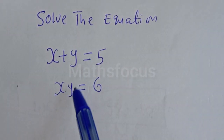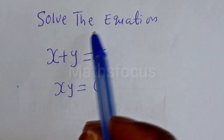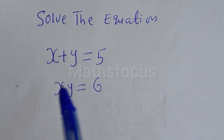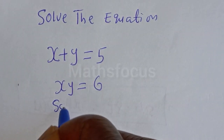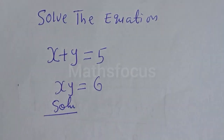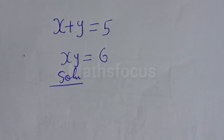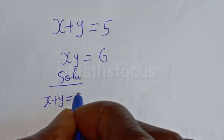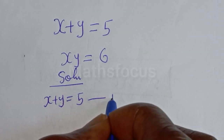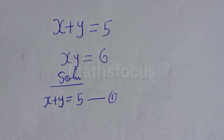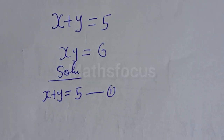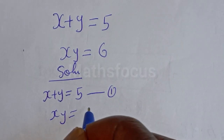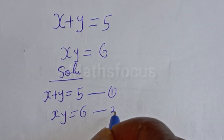Hello, we want to solve for S and Y from this equation: S plus Y is equal to 5, let's call this equation 1, and S times Y is equal to 6, let's call this equation 2.